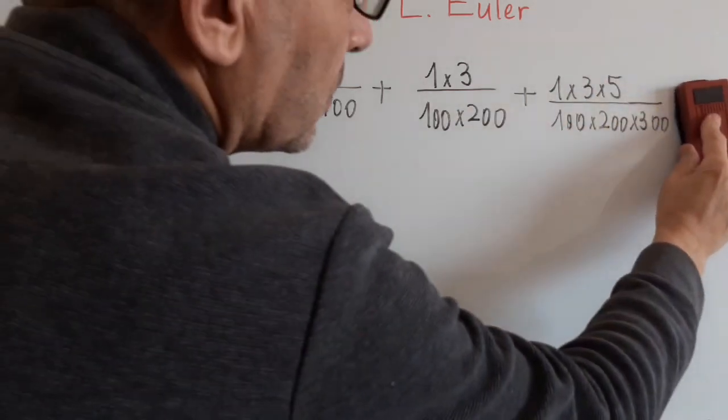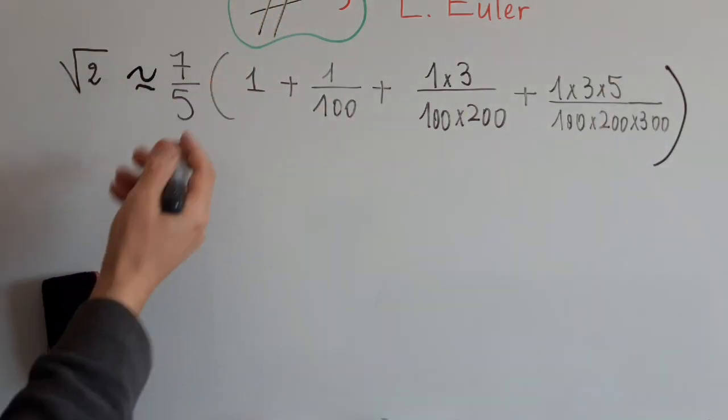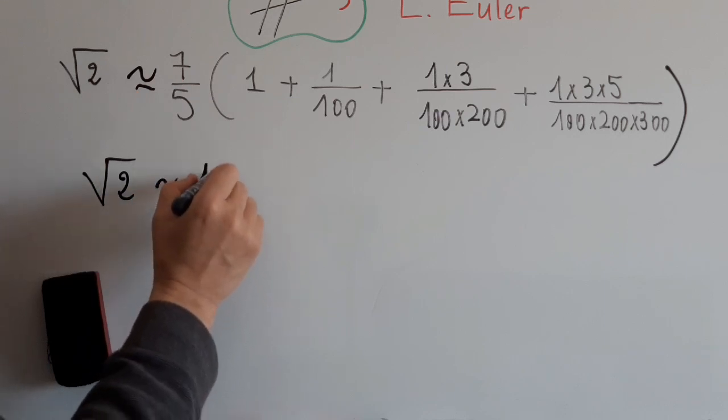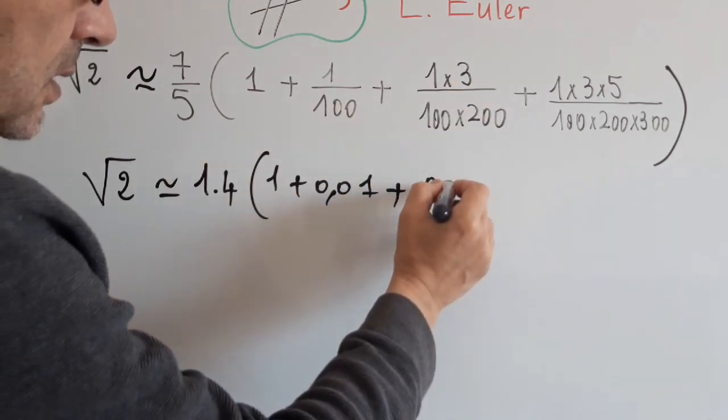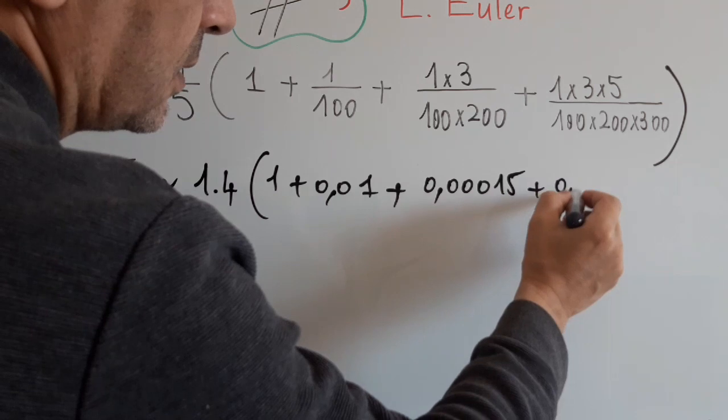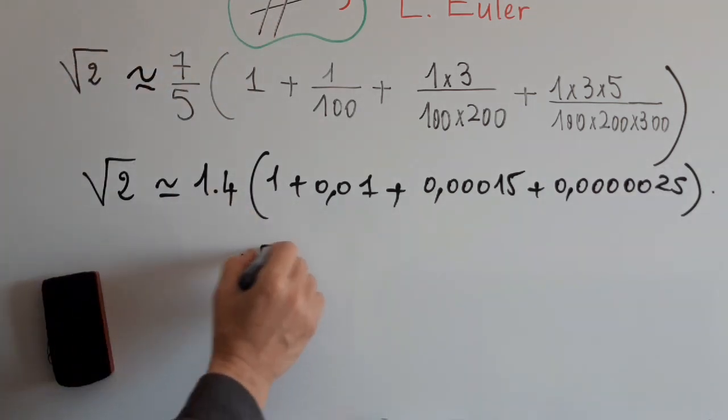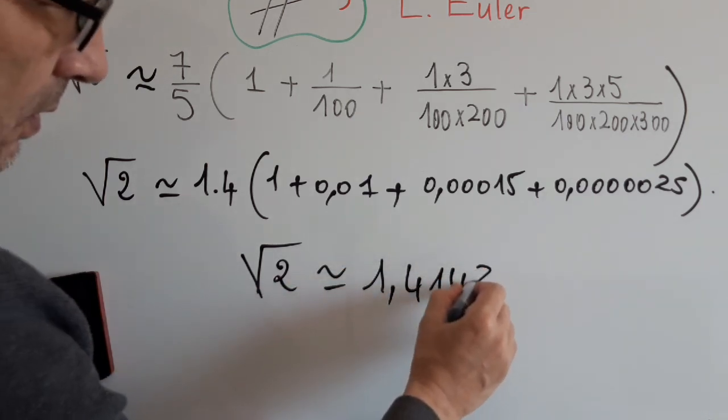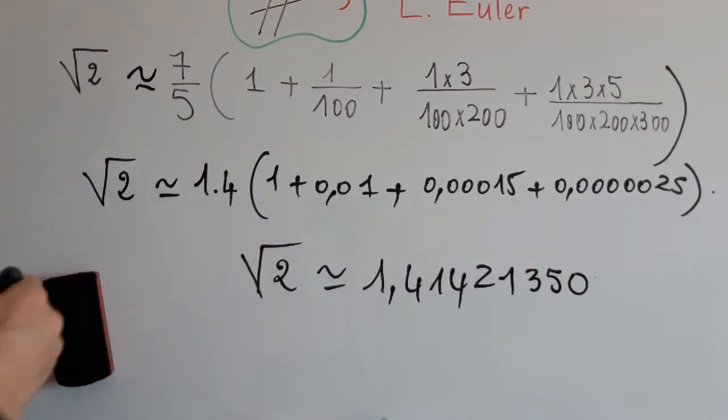So by considering the four first terms, calculated by pen and paper, we obtain that this is 1.4 times 1 plus 0.01 plus 0.00015 plus 0.0000025. And finally, we found that this is 1.414213500.